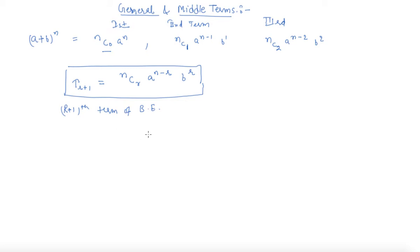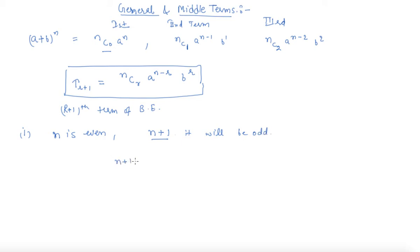Similarly, you can also find out the middle term. First case: when n is even, the number of terms in the expansion is n plus 1, and since n is even, n plus 1 is odd. Therefore, the middle term will be the (n+1+1)/2 th term, that is the (n/2 + 1)th term, which is the middle term when n is even.